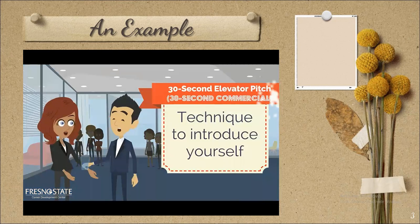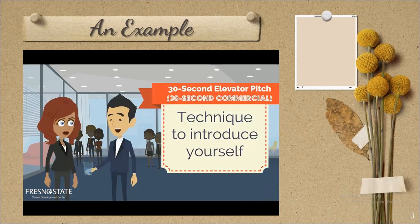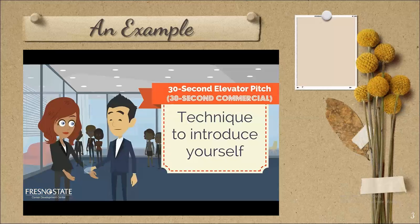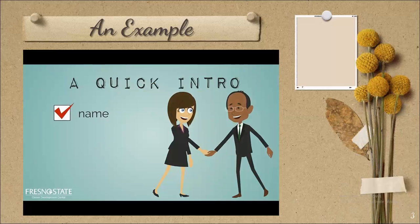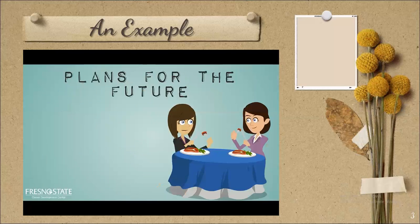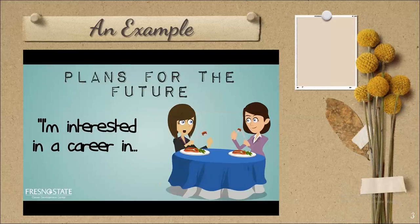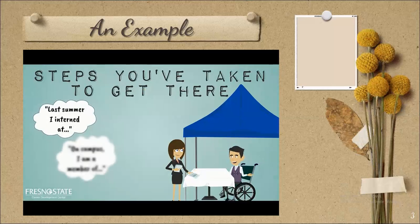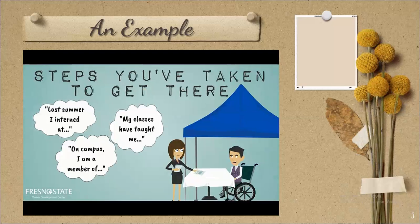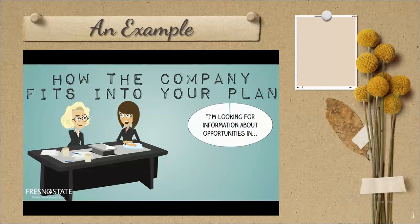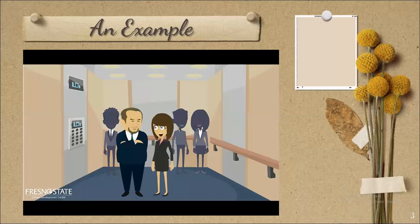A 30-second elevator pitch, sometimes called your 30-second commercial, is a quick way to introduce yourself at a career fair, when networking, or in any professional setting. Start off with a quick intro — your name, year in school, and major. Next, mention your plans for the future and what field you're interested in. Then talk about the steps you've taken to get there, briefly describing your experience or skills. Finally, if you're talking to an employer, mention how their company fits into your career plan. That's your 30-second elevator pitch — create one and you'll be able to approach employers with confidence.